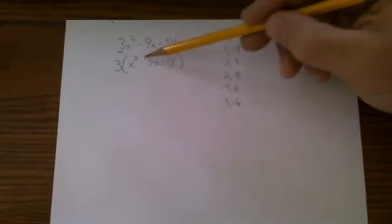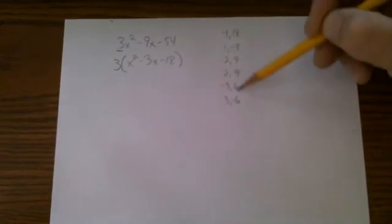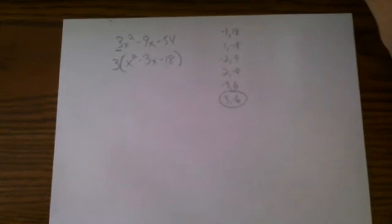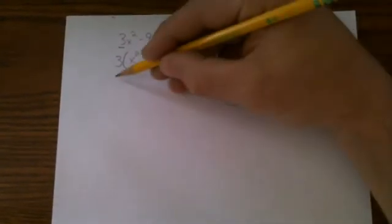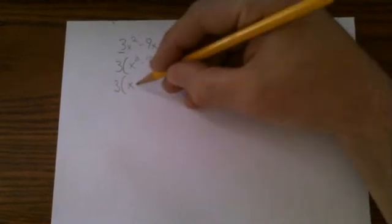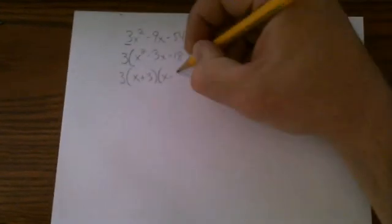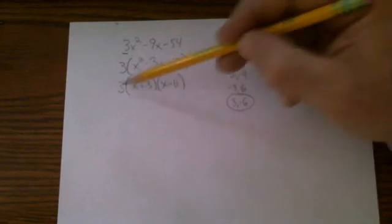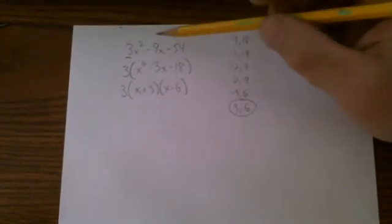So we're looking for the one that adds to negative 3 because that's the middle term. And that is right there. The last one. So our factors are x plus 3 and x minus 6. Don't forget to bring back down your GCF because when we multiply it back through without the GCF it will not yield an equivalent expression. So if I were to foil these together and distribute the 3 I would end up with this polynomial in return. So this is factored completely.